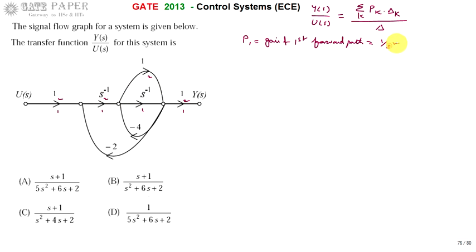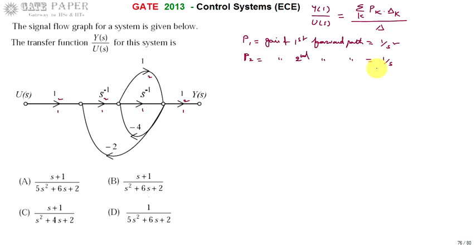P2, the gain of the second forward path, follows the path 2-2-2-2: 1 × s⁻¹ × 1 × 1 = s⁻¹, which is 1/s. So the forward path gains P1 = 1/s² and P2 = 1/s have been calculated.